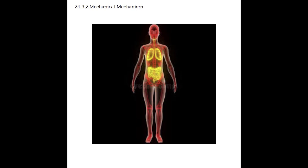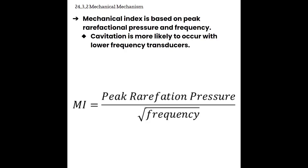Mechanical index is based on the peak refraction pressure and frequency. And we'll see that the likelihood of cavitation to occur is going to increase as we lower the frequency. From our formula here, the mechanical indice is equal to the peak refraction pressure divided by the square root of the transducer frequency. We can see that peak refraction pressure is directly related to the mechanical index. So if there is more pressure, it's going to cause a higher mechanical index. We also see that frequency is inversely related to the mechanical index. So if we lower our transducer frequency, we will see an increase in the mechanical index value. Lower frequencies are going to make it more likely that cavitation will occur.